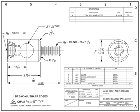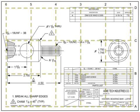Most drawings are broken out into zones using a simple alphanumeric grid. This grid is critical for large, complex drawings when discussing changes or details. The grid helps drafters and engineers pinpoint where information is located.